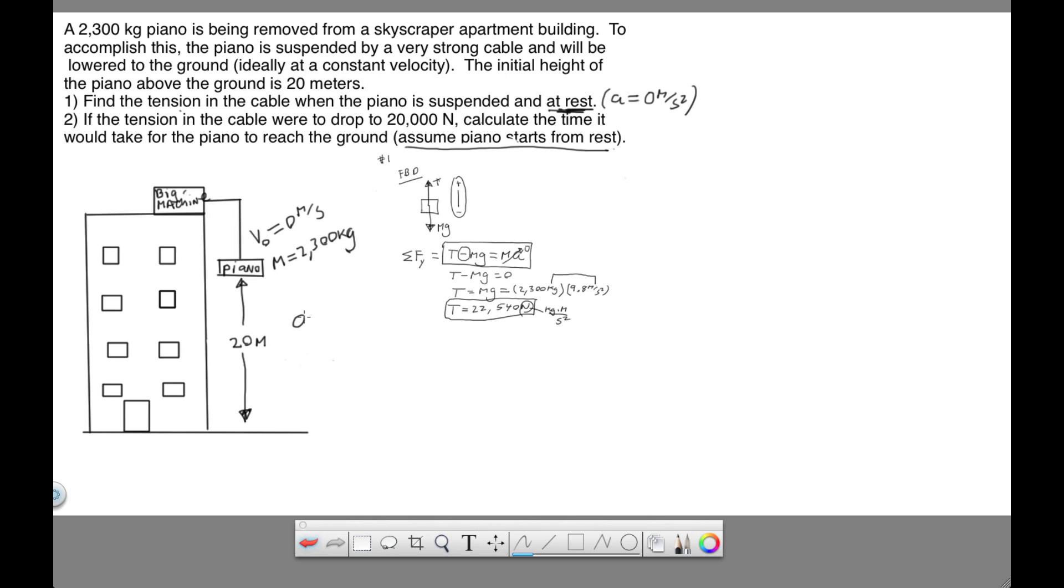We don't have the acceleration of the piano. It's not going to be gravity because the piano is not in free fall. There's an upward tension acting on the piano. We're asked to find the time, that's a question mark. And we have the vertical displacement, which is negative because the piano is going down. Again, our sign convention, down is negative, up is positive.